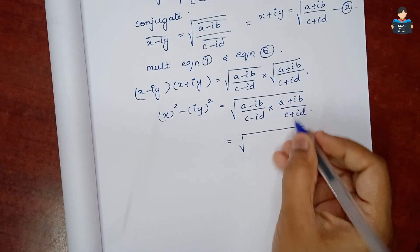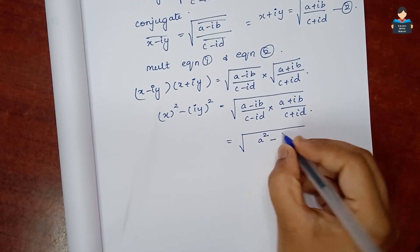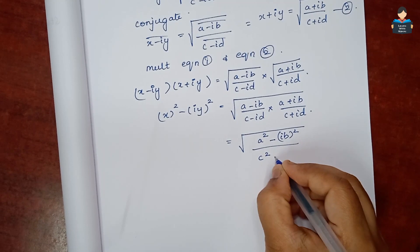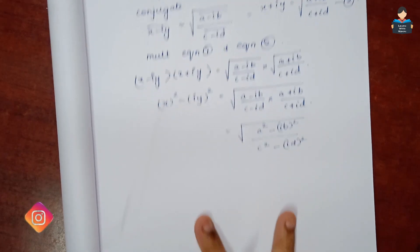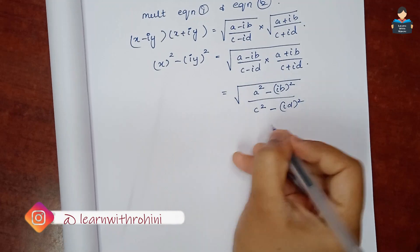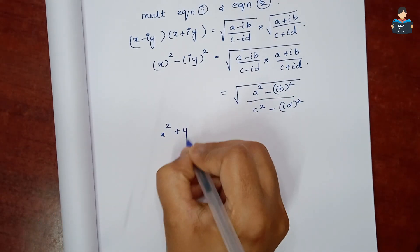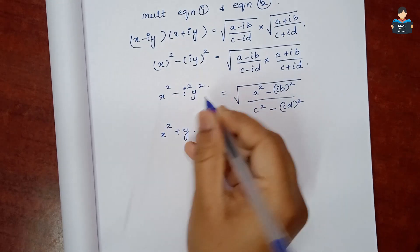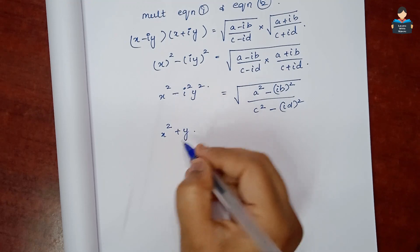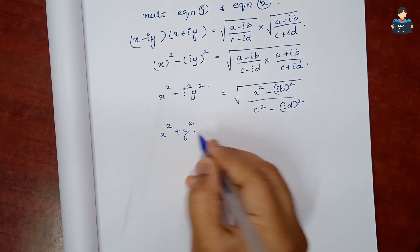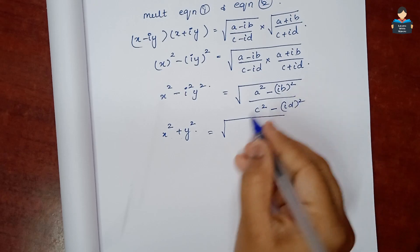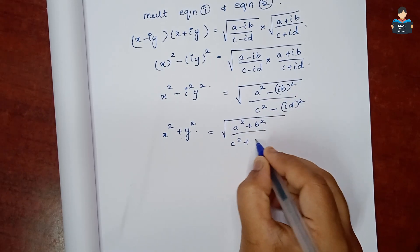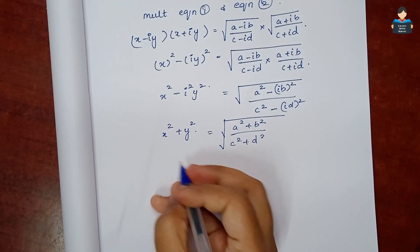Applying (A − B)(A + B) = A² − B² formula: numerator becomes a² − (ib)² = a² + b², and denominator becomes c² − (id)² = c² + d². On the left side, (x − iy)(x + iy) = x² − i²y² = x² + y². So x² + y² = √((a² + b²)/(c² + d²)).